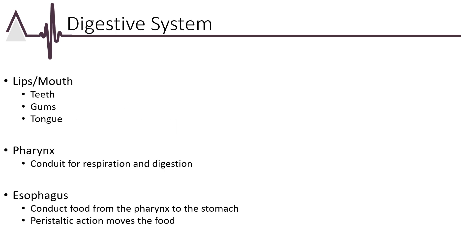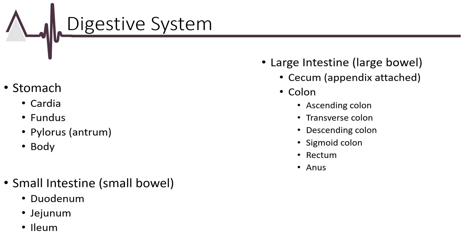The digestive system is a complex system of organs and structures responsible for breaking down food into smaller molecules that can be absorbed and used by the body. The major organs include the mouth, pharynx, esophagus, stomach, small intestines, large intestines, rectum, and anus. The anatomy of the digestive system is critical to correct code selection — many codes depend on how far the provider went into the digestive system.